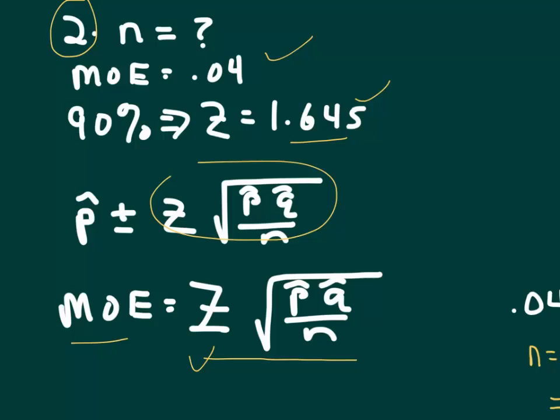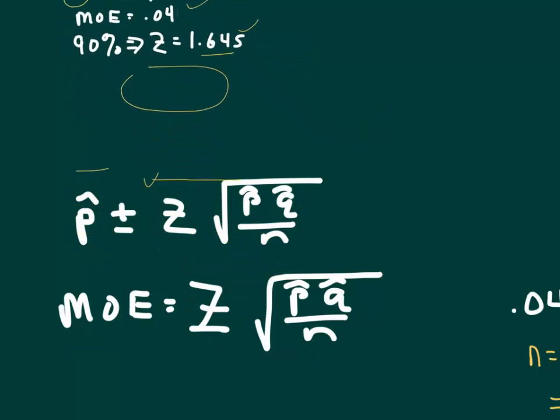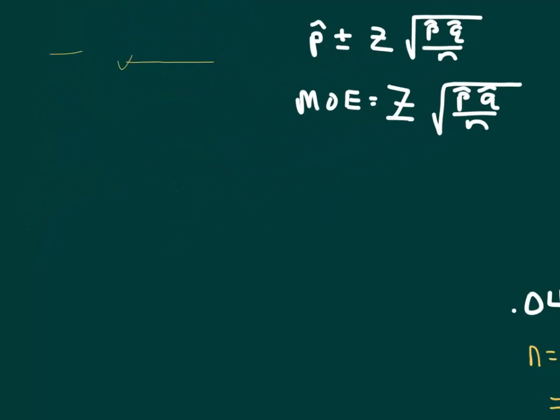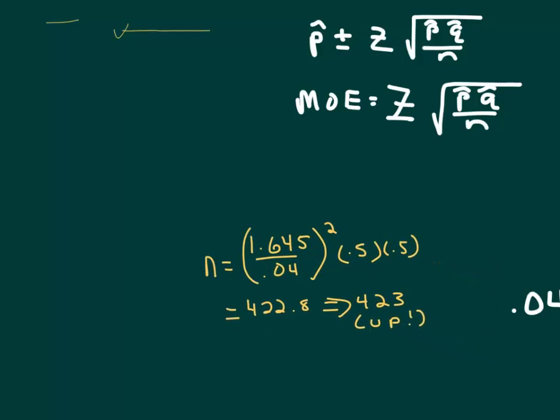Now on the p hat q hat over n, if there were a pilot study or some previous knowledge that you know what, you have some idea of where p hat might go, then you'll plug that number in for p hat, and then 1 minus that for q hat. In this particular problem, we don't have a pilot study. In that case, you'll always get the most conservative sample size if you will put 0.5 in for both p and q.